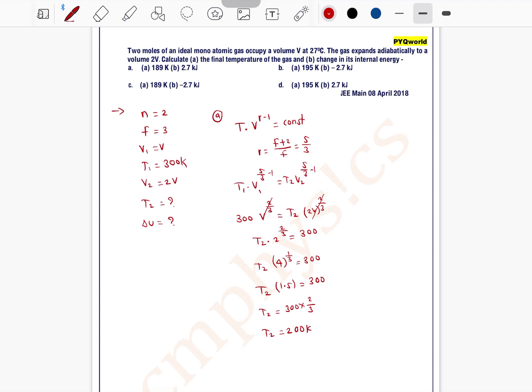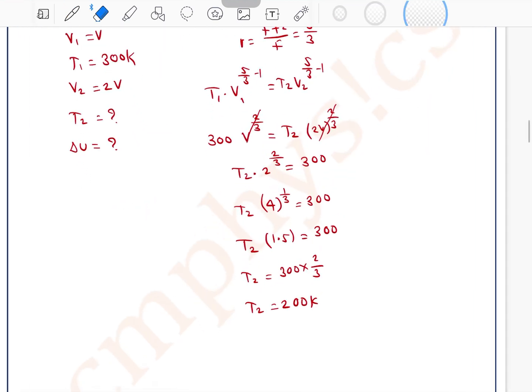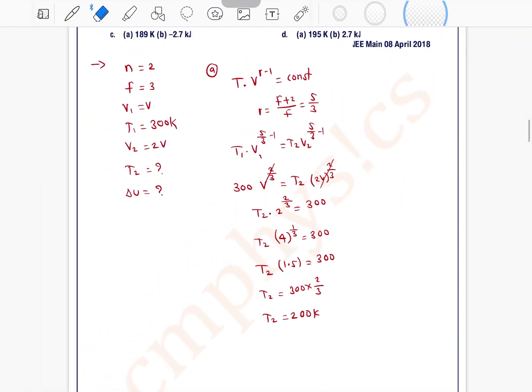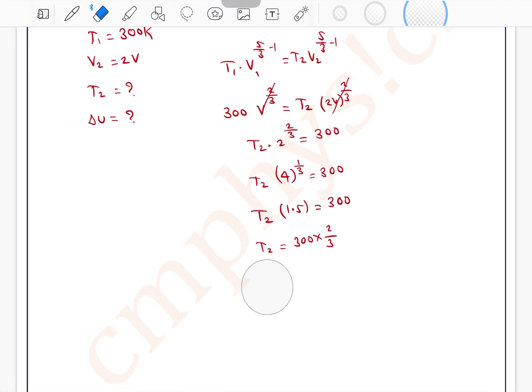We will check cube root of 4. Cube root of 4 is 1.58. Okay, so I will solve exactly for this. We have to solve for this only.